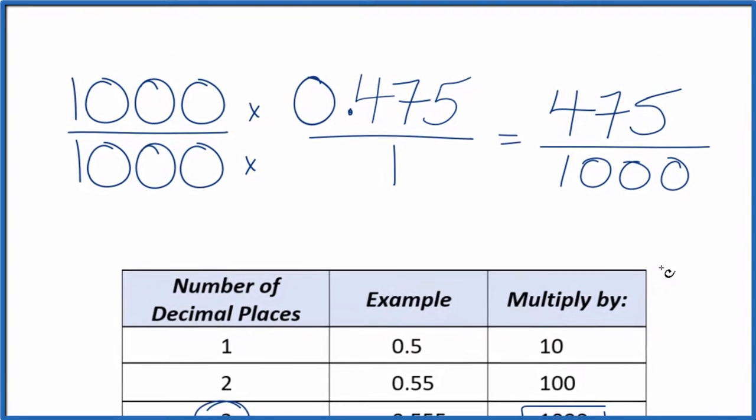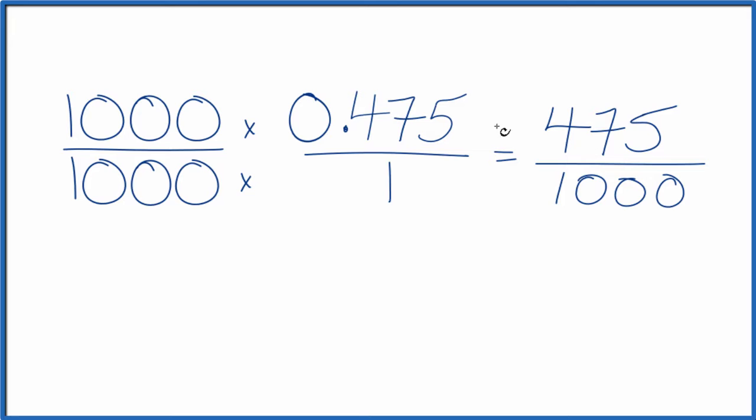So let's give ourselves some room. 475 divided by 25, that's 19, and then a thousand divided by 25 is 40. So the decimal 0.475, that's equal to the fraction 19/40. If you divide 19 by 40 or 475 by a thousand, you'll get 0.475.